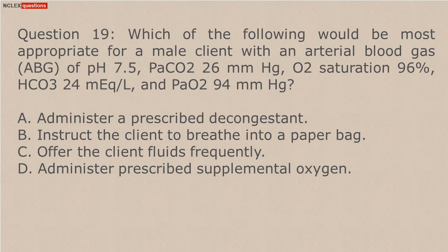Question 19. Which of the following would be most appropriate for a male client with an arterial blood gas (ABG) of pH 7.5, PaCO2 26 mmHg, O2 saturation 96%, HCO3 24 mEq/L, and PaO2 94 mmHg? A. Administer a prescribed decongestant. B. Instruct the client to breathe into a paper bag. C. Offer the client fluids frequently. D. Administer prescribed supplemental oxygen.